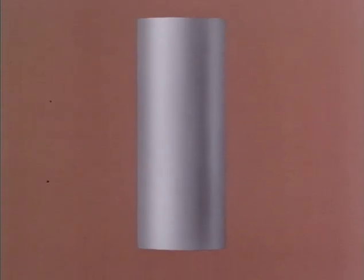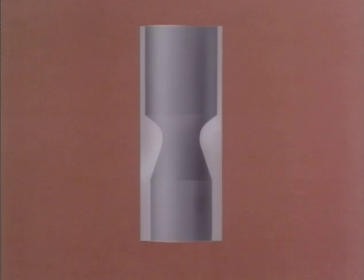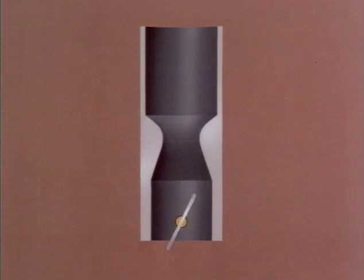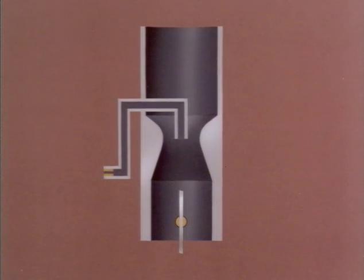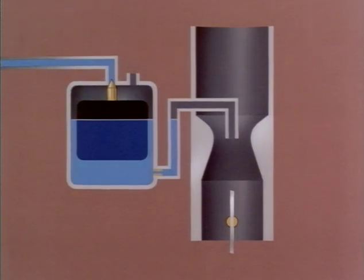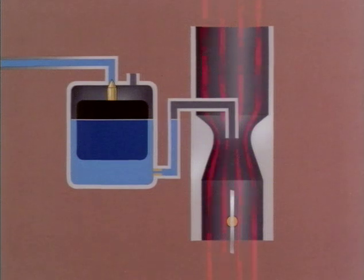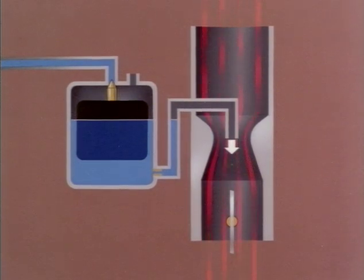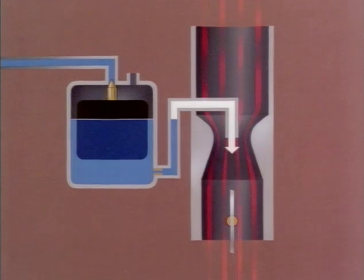In a simple single-jet carburettor, there would be a venturi, a throttle, a jet, and a float chamber, which contains the petrol. The flow of air through the venturi causes a pressure drop, which pulls petrol from the float chamber, through the jet, into the airstream.